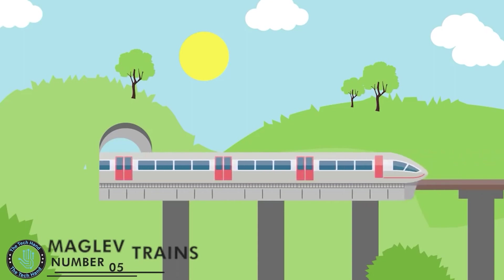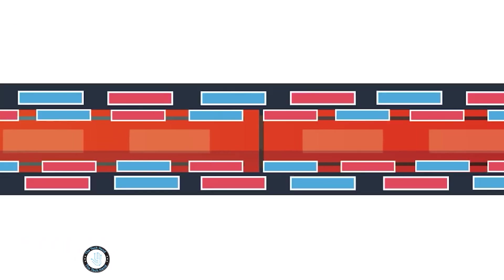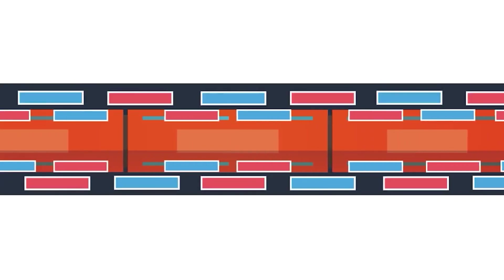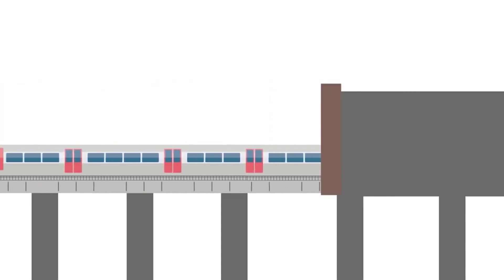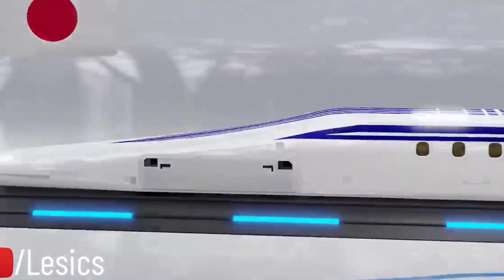Number 5: Maglev Trains. Maglev trains are a type of high-speed transportation that uses magnetic levitation to float above the tracks on which they travel. This allows them to move without the friction that is present on traditional trains, which makes them much faster and more efficient.